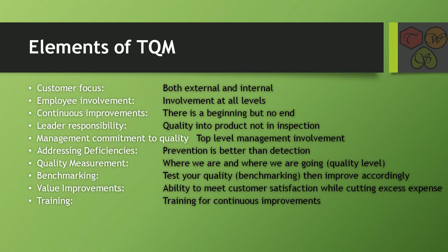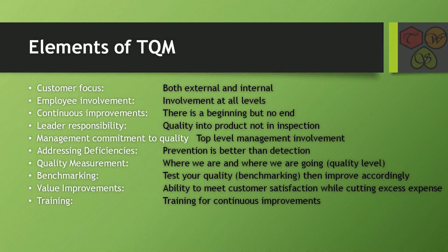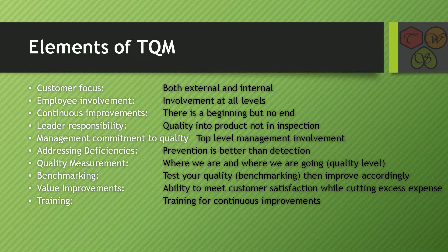The second last one is value improvements. This means the ability to meet customer satisfaction while cutting excess expenses. You should focus on customer requirements and satisfaction, and also work on reducing the excess expenses incurred while making the product. The last one is training — you should continuously provide training for continuous improvement to the employees working in the company. So here we have covered the 10 elements of total quality management.